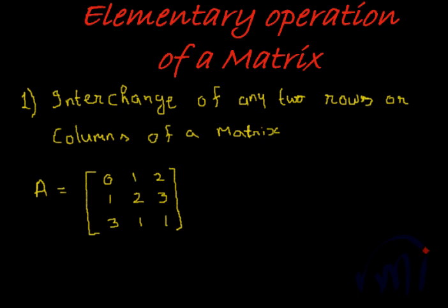The first operation is: if you interchange any two rows or columns of a matrix, the nature of the matrix does not change.